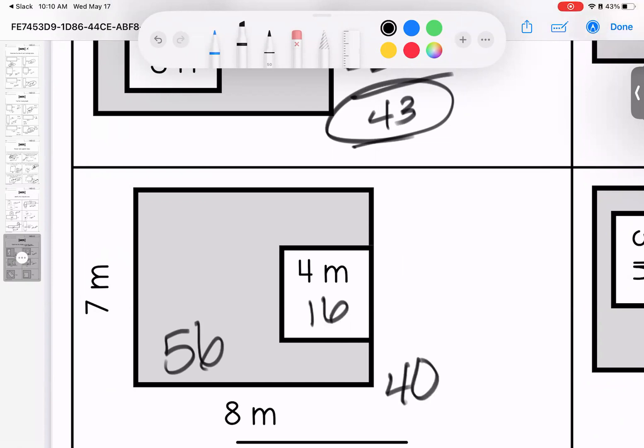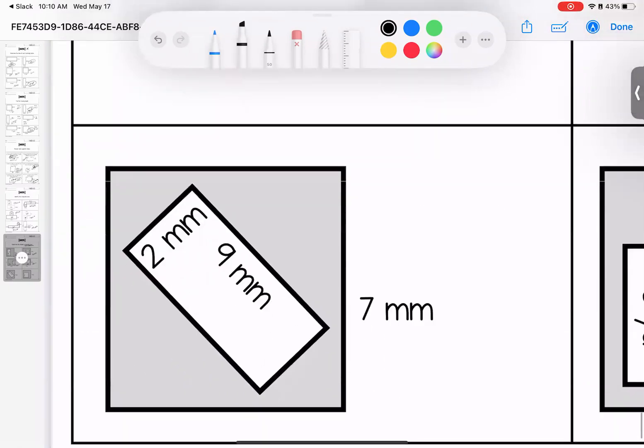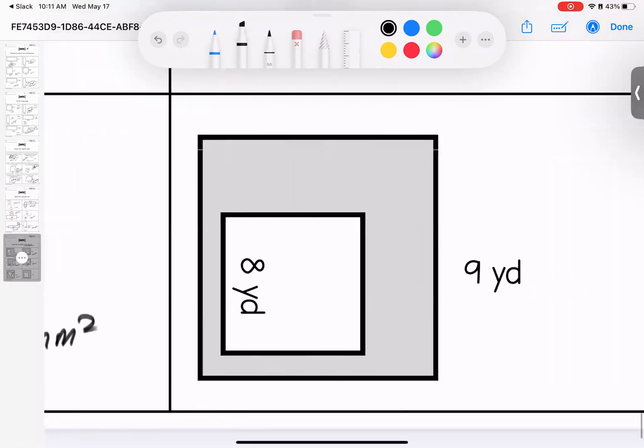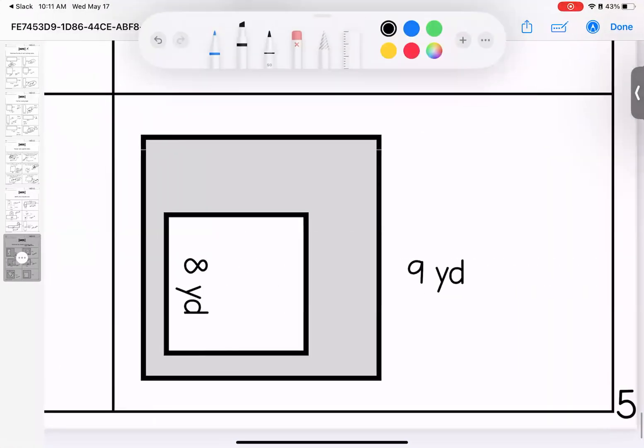Here we have 49 shaded, 18 not. When we take away the part that's not shaded we have 31 millimeters squared. Last one, shaded is 81, not shaded is 64. Taking away the not shaded we have 17 yards squared shaded. If you have questions, bring them to class. Have a good week.